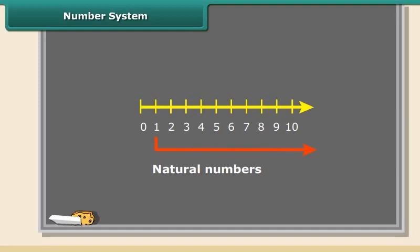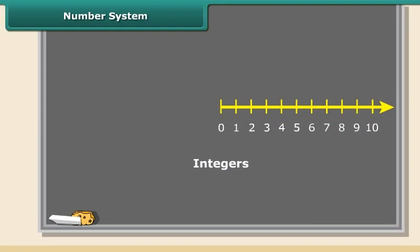Natural numbers are the positive whole numbers except zero. Integers are like whole numbers but they also include negative numbers, so integers can be positive, negative, and zero.